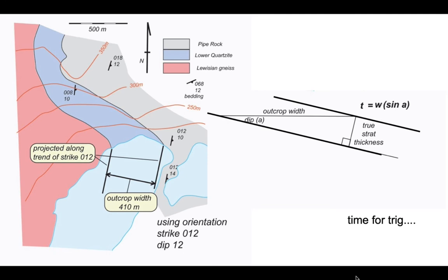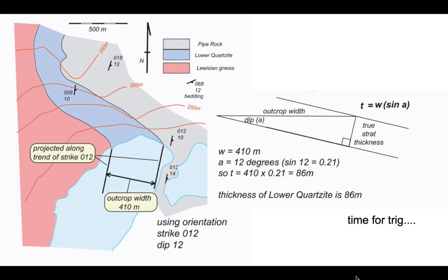So let's plug in our numbers. The outcrop width w is 410 meters. The dip that we're using is 12 degrees so a is 12 degrees. The sine of 12 degrees is 0.21. So t, the true stratigraphic thickness, is 410 meters times 0.21 which comes out at 86 meters. So the thickness of our lower quartzite layer is 86 meters.